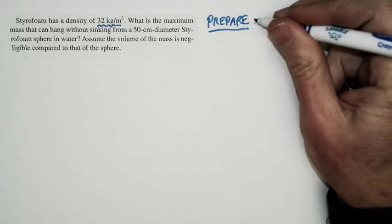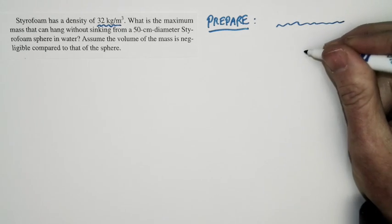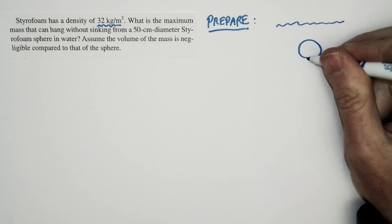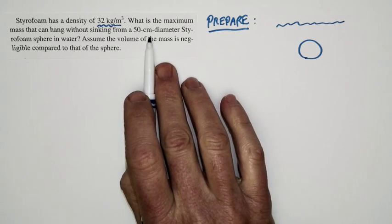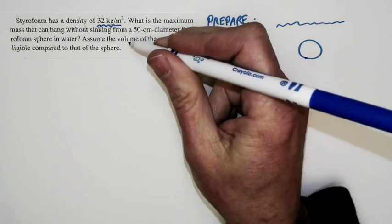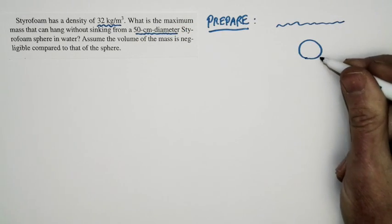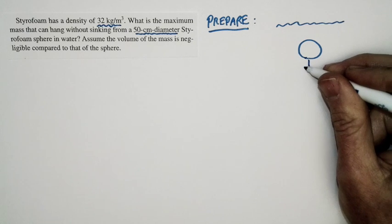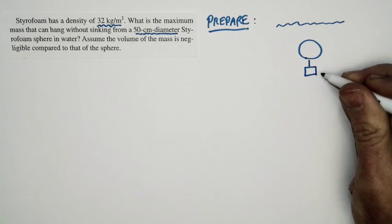So I'm imagining a situation like this. I've got a container of water, and underneath the surface of the water, there's a gigantic styrofoam sphere. This is 50 centimeters in diameter. 50 centimeters is about a foot and a half, so this is a huge styrofoam sphere. There's some sort of mass which is hung from it, and we're assuming that the volume of the mass is negligible, so we don't have to worry about the buoyant force on the mass.